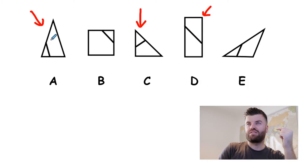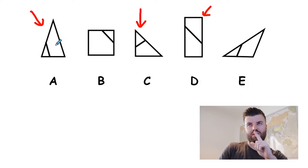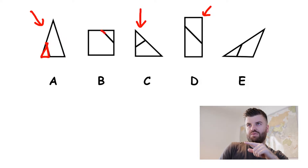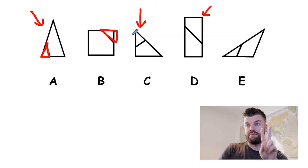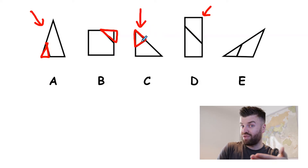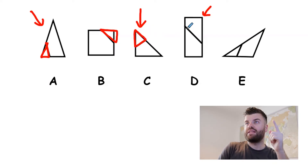Let's move on and take another look. There's something to do with the line inside the shape — they all have a line, so it can't be just the presence of a line. This one here comes across and makes a triangle inside. Let's see what the others do: this one comes across and makes another triangle — that's two the same. This one also makes a triangle — that's three the same. This is looking promising, because we want four the same and one different.